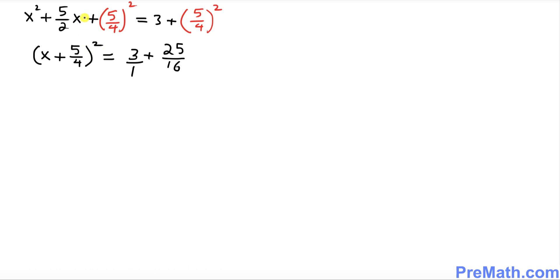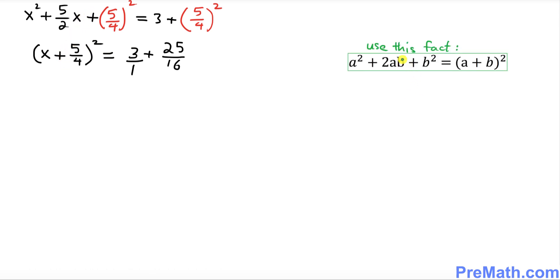You might be wondering how we got this complete square. We use this well-known fact: a² + 2ab + b² can be written as (a + b)². This is what I put down. This x showed up right here, 5/4 is right here. Whatever this sign is will be in the middle.